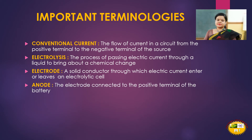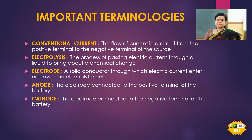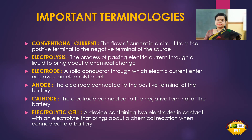There are two types of electrodes. The electrode connected to the positive terminal of the battery is known as the anode. The electrode connected to the negative terminal of the battery is known as the cathode. An electrolytic cell is a device containing two electrodes in contact with an electrolyte — a liquid capable of conducting electric current — that brings about a chemical reaction when connected to a battery. The entire arrangement of cathode, anode, and electrolyte connected to a battery is called an electrolytic cell.